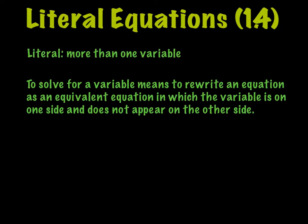So when the instructions say to solve for a variable, that means you're going to rewrite the equation as an equivalent equation, so you have to follow your order of operations, in which the variable that you're solving for is on one side and does not appear on the other side, and that's important. All right, so let's do some examples.